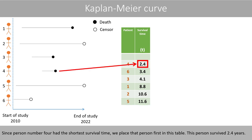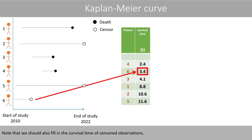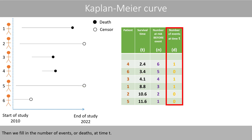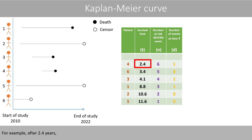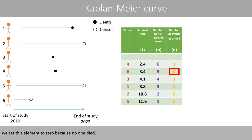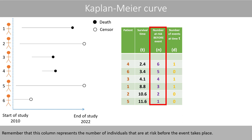Since person number 4 had the shortest survival time, we placed that person first in this table. For example, this person survived 2.4 years. Note that we should also fill in the survival time of the censored observations. Then we fill in the number of events or deaths at time t. For example, after 2.4 years, one person died. Since person number 6 left the study after 3.4 years, we set this element to 0 because no one died. Remember that this column represents the number of individuals that are at risk before the event takes place.